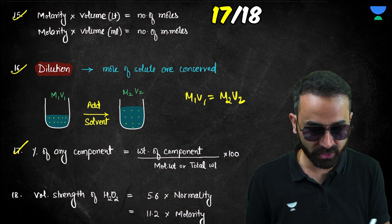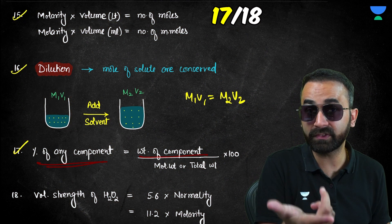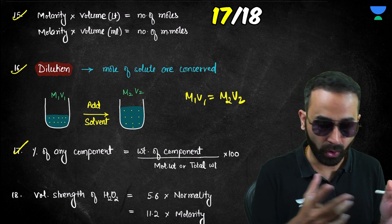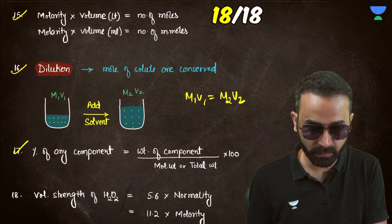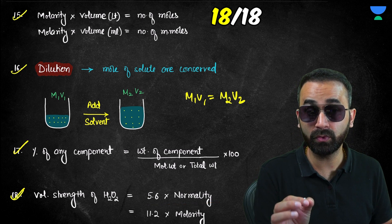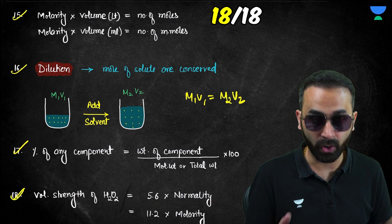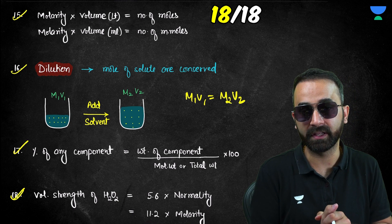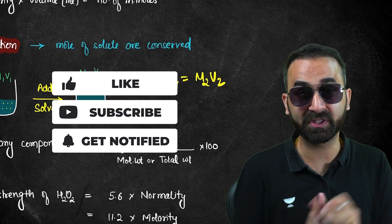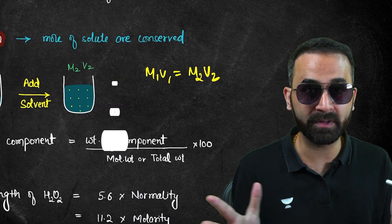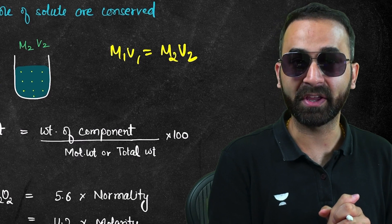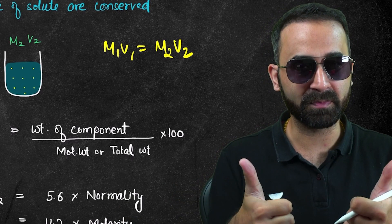Calculating the percentage of any component is the weight of that component divided by the molecular weight or total weight, multiplied by 100. The volume strength of H₂O₂ solution is 5.6 times its formality or 11.2 times its molarity. Those were the 18 most important formulas — like, share, subscribe, and let us know in the comments what other videos you'd like to see.